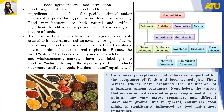Food ingredients and food formulation. Food ingredients include food additives, which are ingredients added to food for specific technical and functional purposes during processing, storage, and packaging. Food manufacturers use both natural and artificial ingredients to add or preserve the flavor, color, and texture of foods. The term artificial generally refers to ingredients or foods created to imitate nature, such as certain colorings or flavors.